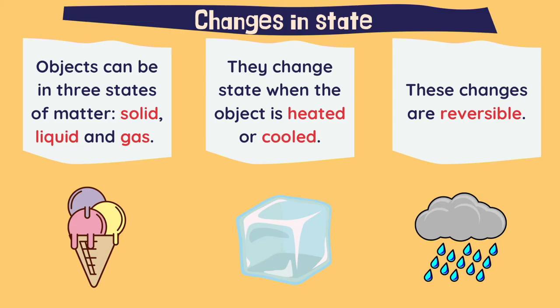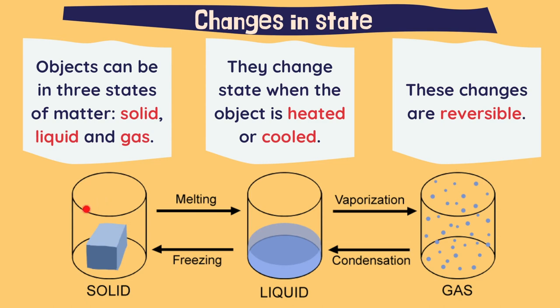Now let's have a look at the names of this process of changing the state of matter. A solid, if we heat the solid, it melts and through melting it becomes liquid. If we continue heating the object, it will vaporize and become a gas. To do this process, we need more heat.